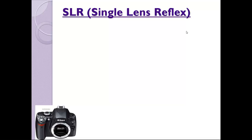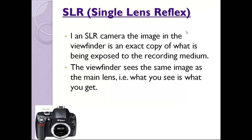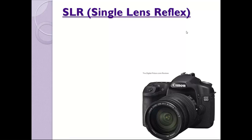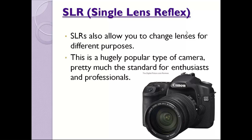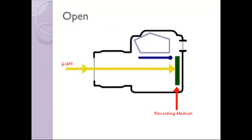SLR — Single Lens Reflex. In an SLR camera, the image in the viewfinder is an exact copy of what is being exposed to the recording medium. The viewfinder sees the same image as the main lens — what you see is what you get. This improves accuracy and allows for better composition of photographs. SLRs allow you to change lenses for different purposes and are pretty much the standard for enthusiasts and professionals. Here is a DSLR camera with the shutter closed. The light bounces off the top of the shutter into a series of mirrors and through the viewfinder. When the shutter is open, the light goes directly to the recording medium.